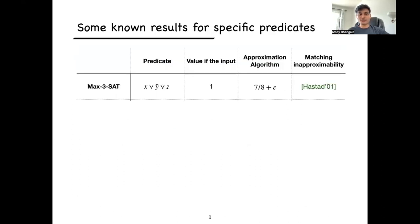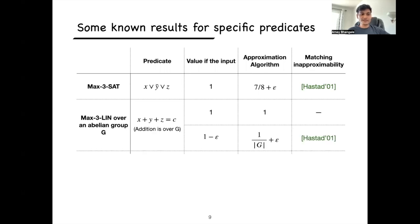Let's look at known results for specific predicates. For max 3SAT, if the instance is satisfiable, we have the 7/8-approximation mentioned earlier and a matching inapproximability result, so we cannot do better even for satisfiable instances. For max 3Lin over an abelian group, where equations are of the form x+y+z = constant, if the instance is satisfiable you can find a satisfying assignment in polynomial time via Gaussian elimination — the problem is easy. However, if the instance is only almost satisfiable, Håstad's inapproximability result shows you cannot beat the random assignment, which gives a 1/g approximation where g is the group size.